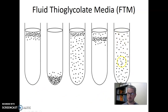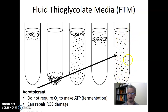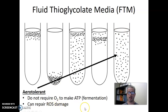The last tube shows bacteria growing equally well everywhere, with no preference for any environment. We call these organisms aerotolerant, or aerotolerant anaerobes. They never use oxygen to make ATP — they always perform fermentation, making two ATP from each glucose, and they grow the same everywhere because they're always making the same amount of energy. Furthermore, they can survive where there is oxygen, meaning they can repair the damage caused by reactive oxygen species.